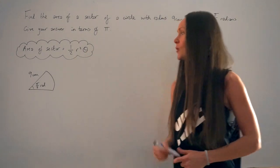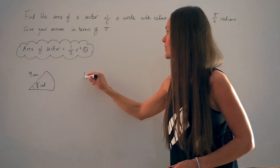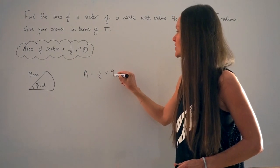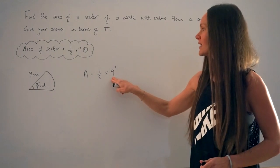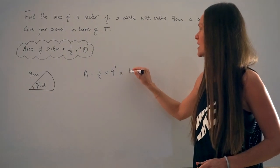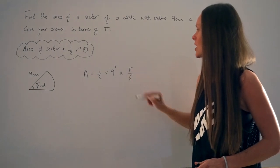So in this question here, to work out the area, we're going to multiply a half by 9 squared because the radius is 9. And then if we times that by theta, the angle in the question, it should be pi over 6.